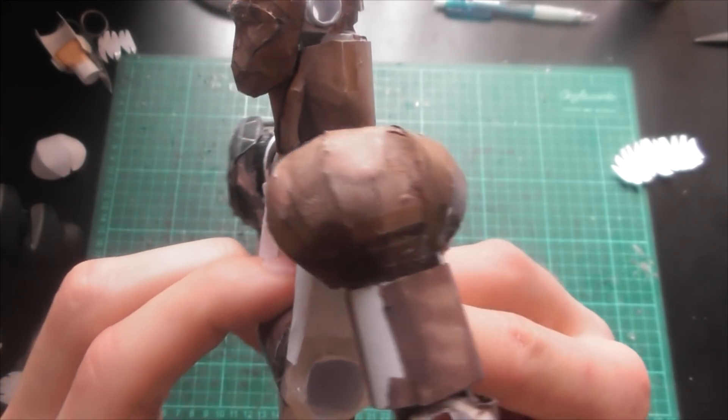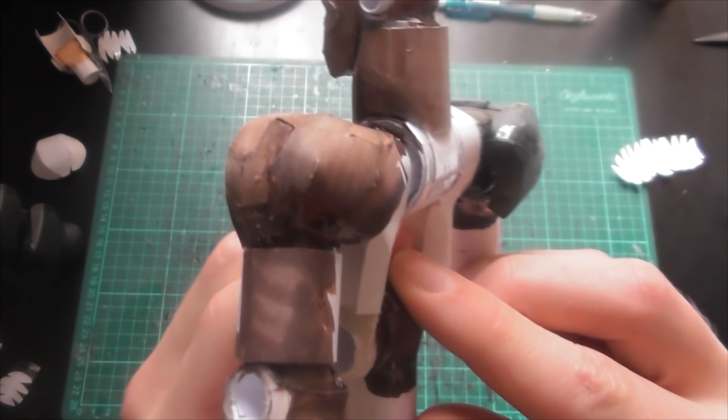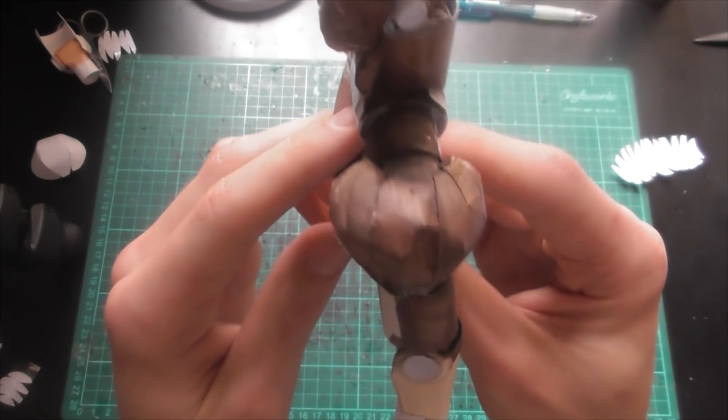Just like you can see with Doomfist here, who has a lot of cuts to get his deltoid muscles to curve the way they do.